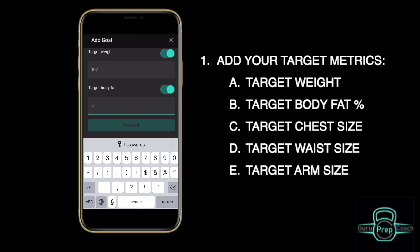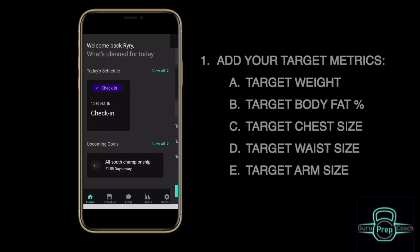Click the Target Measurement button to add a goal for your chest, waist, and arm measurements. Click the Proceed button when you're finished.